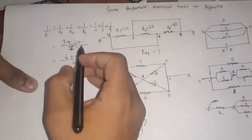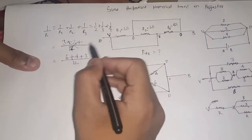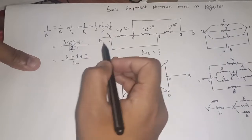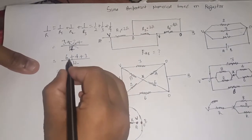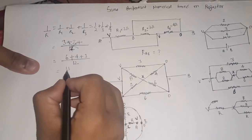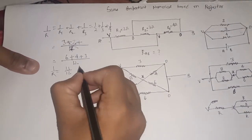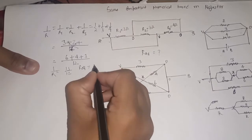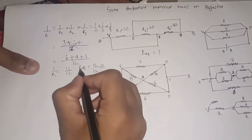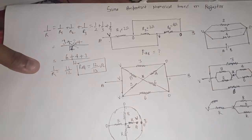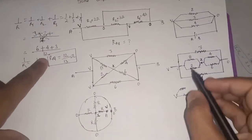I actually made a mistake here — it will be 6. If it is 2 and 3, then it will be 6; if it is 2, 3, and 4, then it will be 12. Now I will add: 6, 4, 10, plus 3 gives 13. So 13 by 12. This is 1 upon R, which means R equivalent is 12 by 13. This is the answer — R equivalent is 12 by 13.